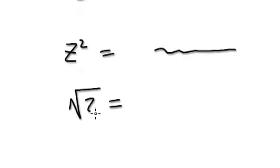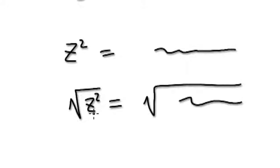So now there's a new thing: if z squared equals blah blah blah blah, you can actually take the square root equally of both sides as well. So for example, square root of this side, and then you square root blah blah blah blah. When you square root a square — look at this — it actually becomes z.